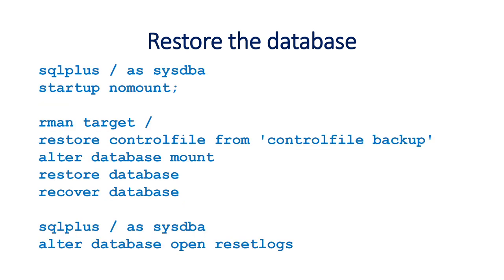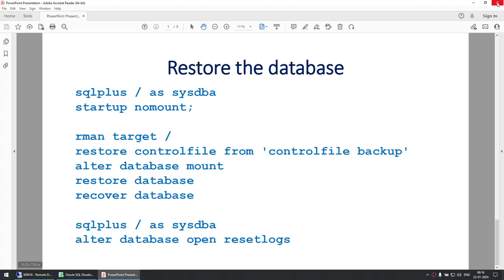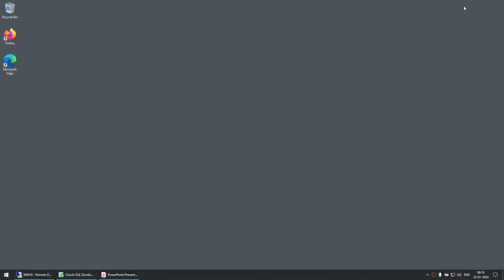To summarize the full steps: connect to the database, startup in no-mount mode, connect using RMAN and restore the control file from the control file backup, alter the database into mount mode, restore the database, recover the database, then alter database open reset logs. Now let's go ahead and do the exercise.